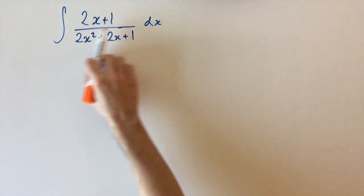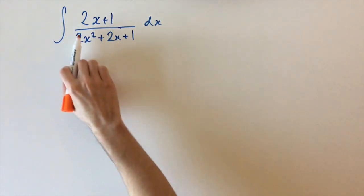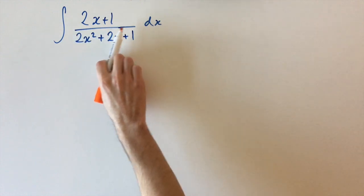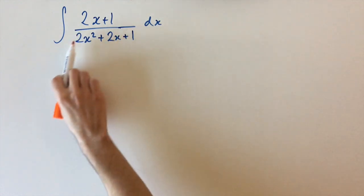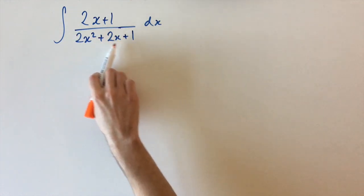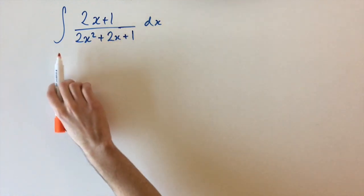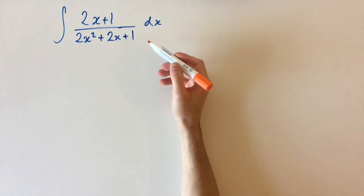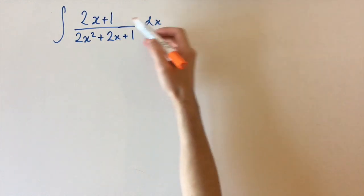So we have this integral that's made up of a fraction, and on the numerator we have a linear term, 2x plus 1, and on the denominator we have a quadratic function, 2x squared plus 2x plus 1. We know that in general the derivative of a quadratic is a linear function, so this is going to motivate us to use a substitution method.